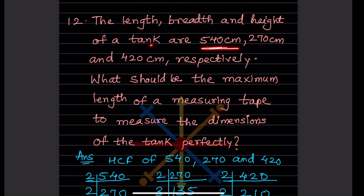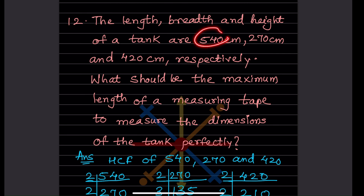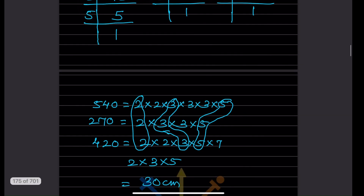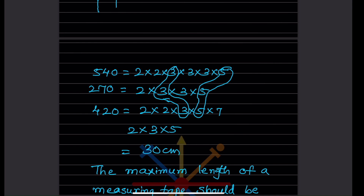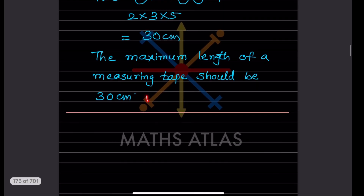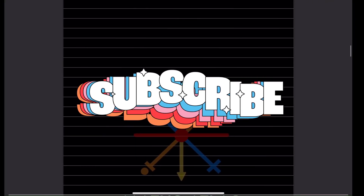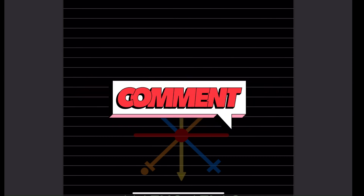Problem: the length, breadth, and height of a tank are 540 cm, 270 cm, and 420 cm respectively. What should be the maximum length of a measuring tape to measure all dimensions perfectly? Find the HCF of 540, 270, and 420 using prime factorization. The common prime factors are 2, 3, and 5, giving 2 × 3 × 5 = 30. The maximum length of the measuring tape should be 30 cm. That completes today's work — please like and subscribe!